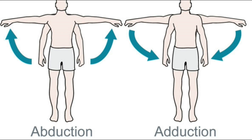When the arm is lifted away from the side and upwards toward a horizontal position, that is abduction. When it is brought down again to hang by the side, that movement is adduction.